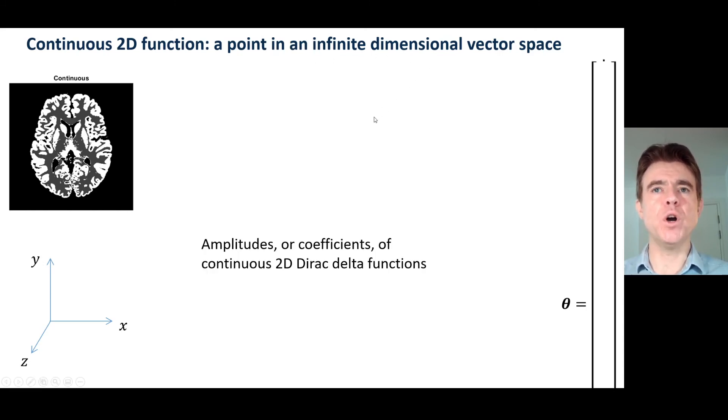So if this is a 2D image here, a 2D function, then we'd have to use a two dimensional Dirac delta function. And I can give you a pointer to a video on Dirac delta functions if you want to understand those better. But the point is, this continuous function would just correspond to using amplitudes or coefficients of continuous 2D Dirac delta functions.